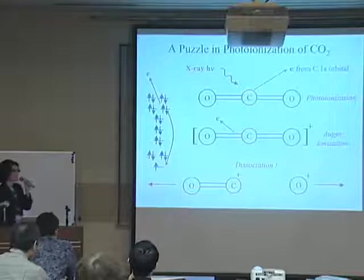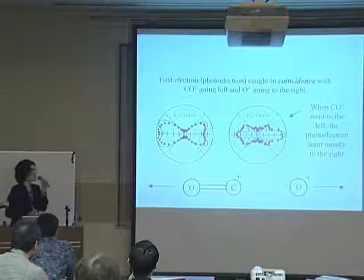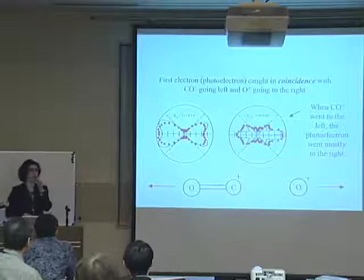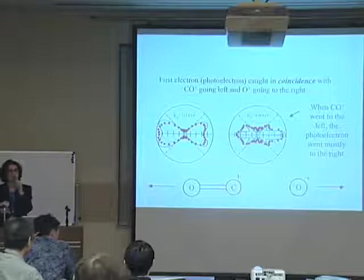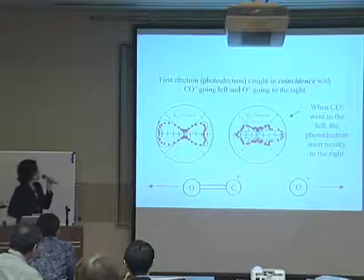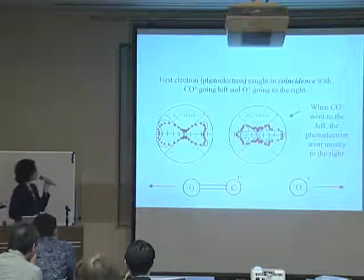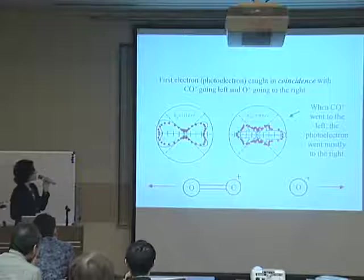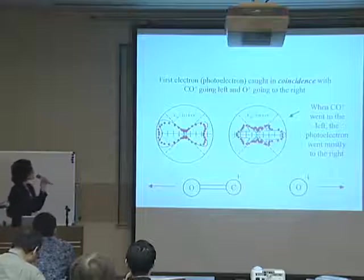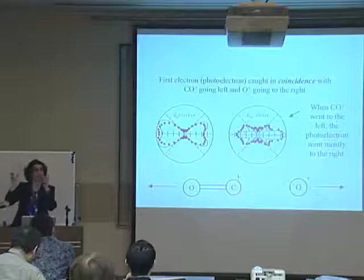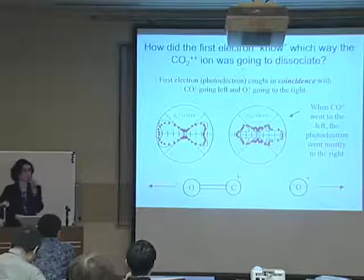So what was the puzzle? We constructed that angular distribution map using COLTRIMS, measuring one molecule at a time over millions of molecules across several hours. What happened is that when we selected molecules where the CO went to the left, we found that the photoelectron was going to the right — and that was completely mind-blowing. We expected a symmetric pattern. Remember, this photoelectron is the very first electron to leave, when the molecule is still symmetric. How does it know beforehand where the fragment is going to go? That was completely puzzling.